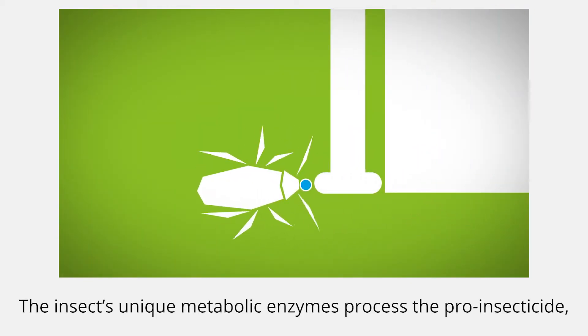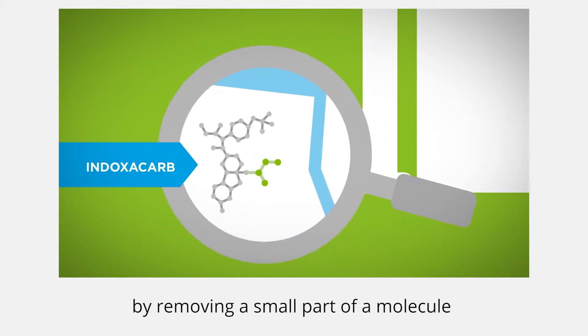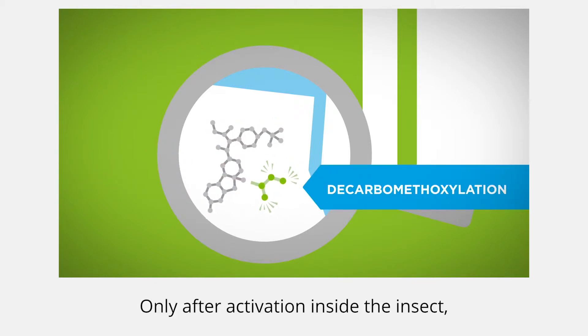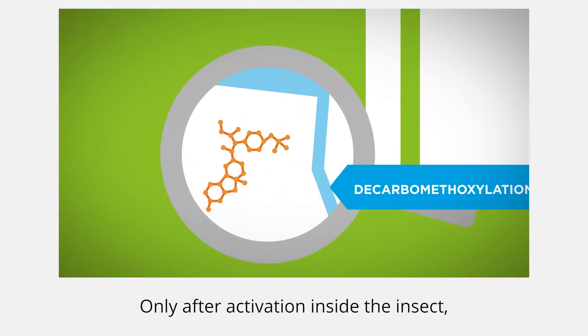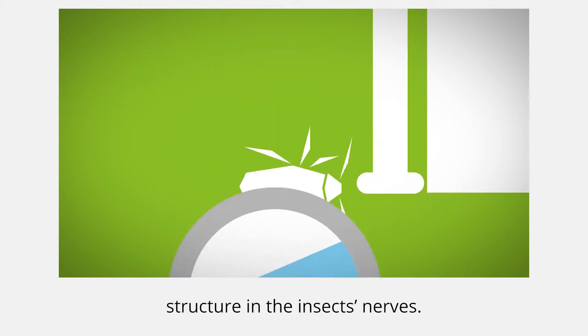The insects' unique metabolic enzymes process the pro-insecticide indoxacarb to its active form by removing a small part of the molecule called decarbomethoxylation. Only after activation inside the insect can the insecticide bind to the target structure in the insect's nerves.